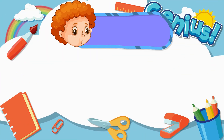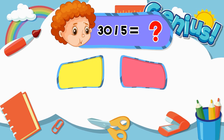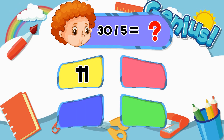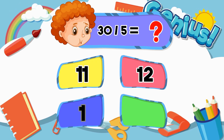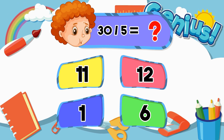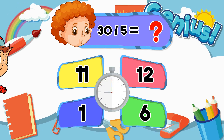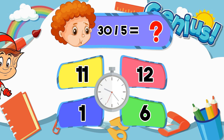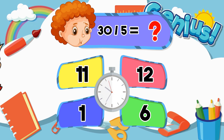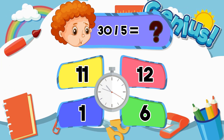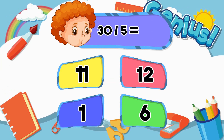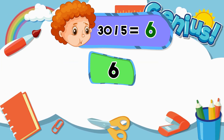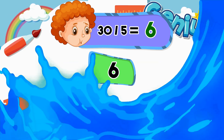What is 30 divided by 5? 11, 12, 1, 6. 6.